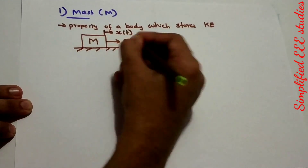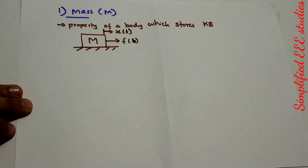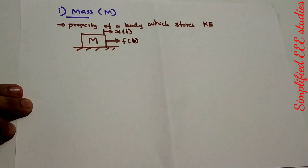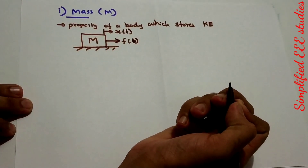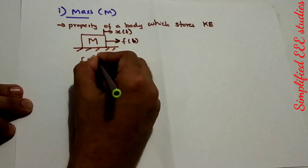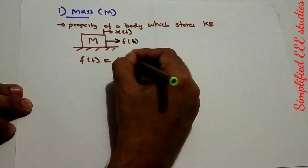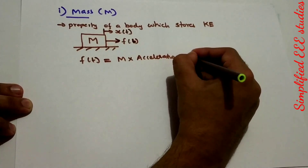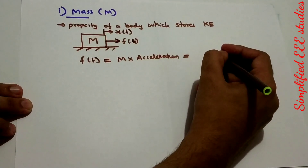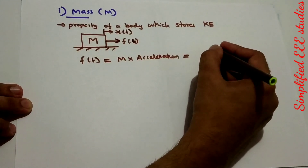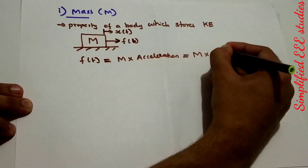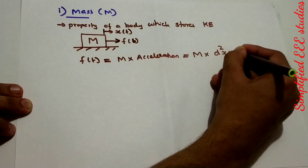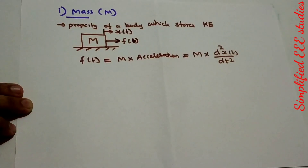Everything will be written in terms of time function — time domain. If a force is supplied on a body having mass M, then it is opposed by an opposing force due to mass. This opposing force is proportional to the acceleration of the body. So we can write: F(t) equals M into acceleration, and since acceleration is the rate of change of velocity — dv/dt — we write F(t) equals M into d²X(t)/dt².